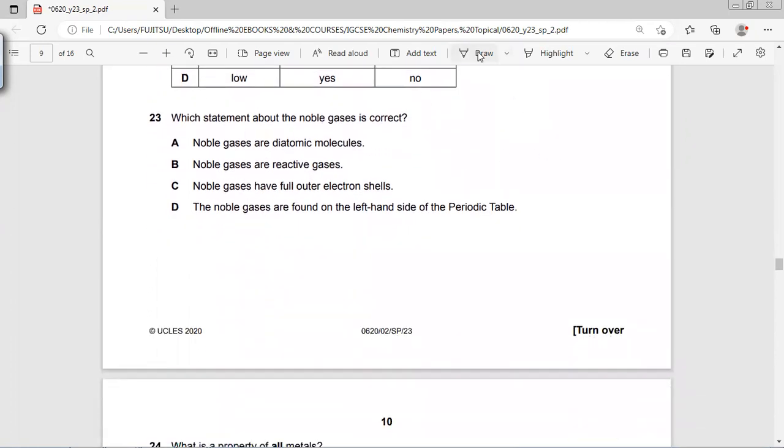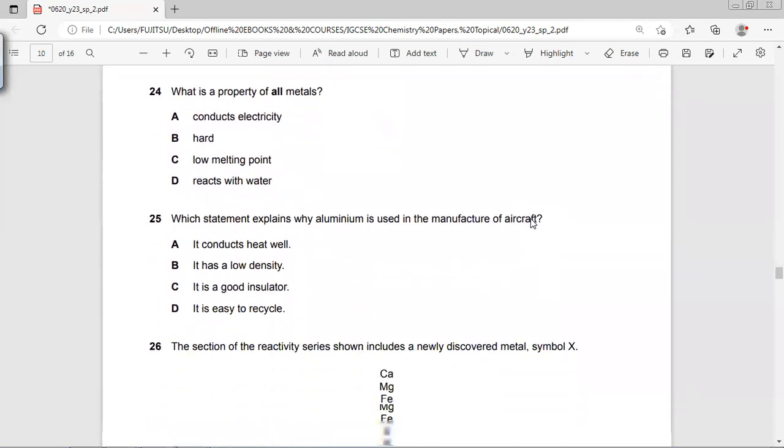Which statement about the noble gases is correct? Noble gases are diatomic molecules? No, they are monoatomic. Noble gases are reactive gases? No, they are not. Noble gases have full outer electron shells? Yes, they are. They are not found on the left side, they are found on the right side.